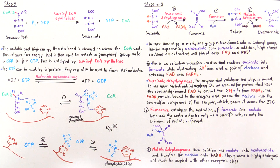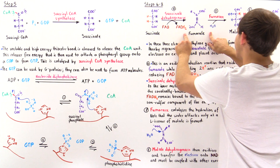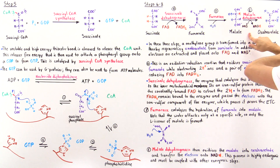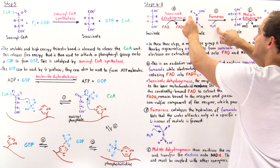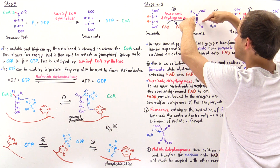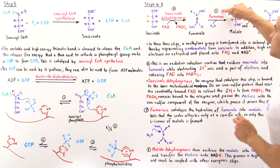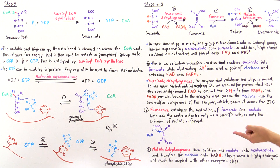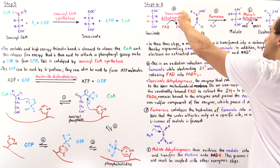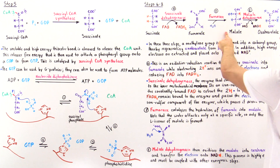In step 7, we have a hydration reaction where fumarate is transformed into malate. A hydroxide from water attacks one carbon from one specific side, and the H ion attaches on the other side, forming the L-isomer of malate. The enzyme that catalyzes step 7 is fumarase. Because the water attacks only from a specific side, we exclusively form the L-isomer of malate.